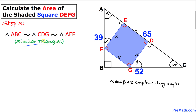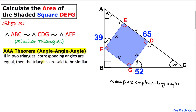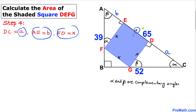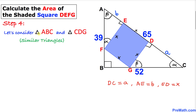We conclude that triangle ABC, triangle CDG, and triangle AEF are similar triangles according to the Angle-Angle-Angle theorem. If in two triangles corresponding angles are equal, then the triangles are said to be similar. I'll call side CD as A, side AE as B, and side ED is already labeled X.